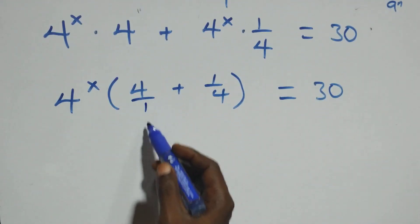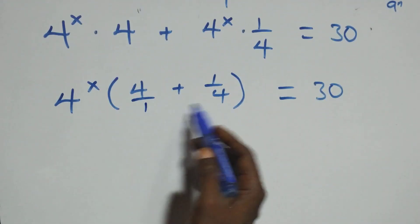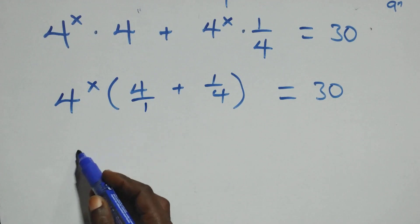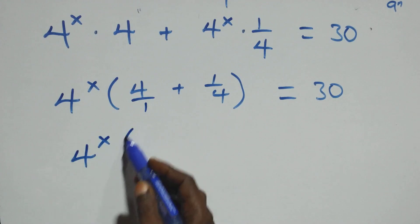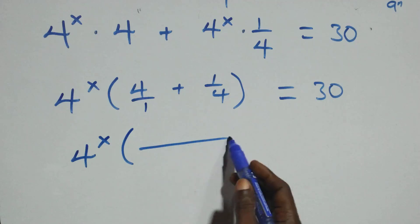Then here, 4 over 1 — when we bring it together as one fraction, we have 4^x into brackets.